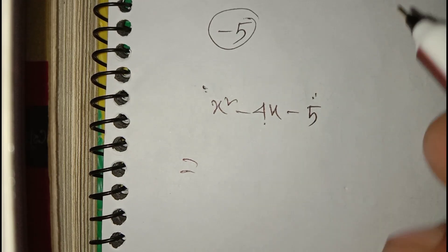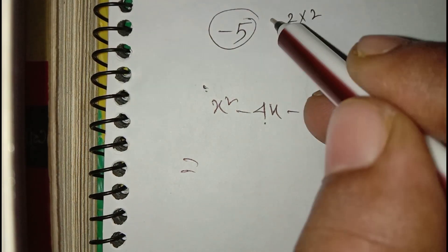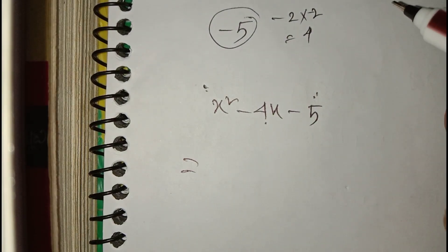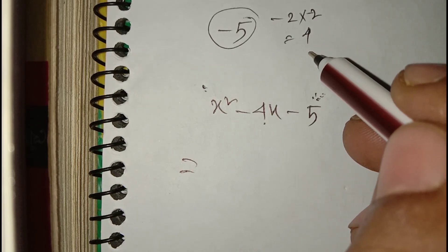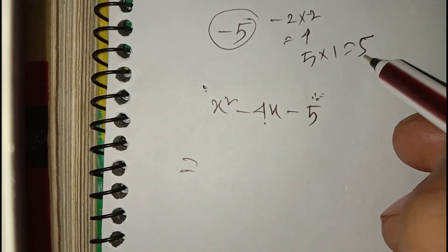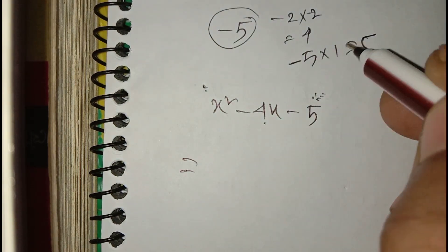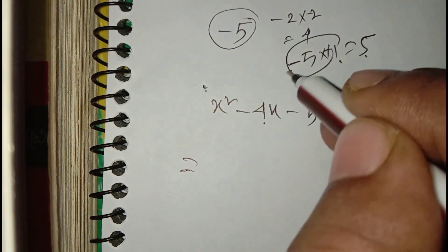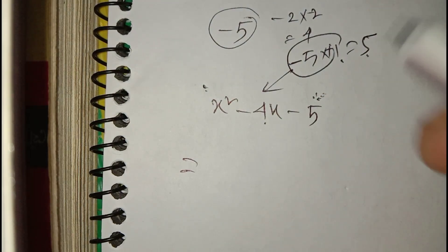If we use two times minus two, that gives plus four, which does not match. So we think of five times one, which gives five. If we use minus five and plus one, their sum gives minus four, which matches the middle term perfectly. So this is the suitable and correct choice.